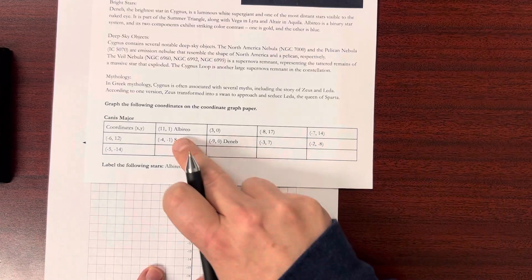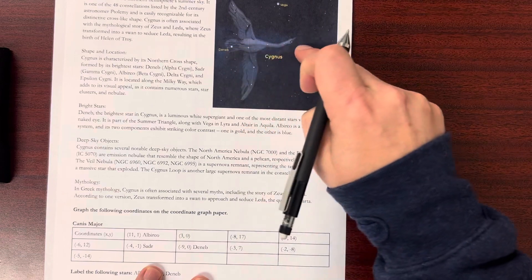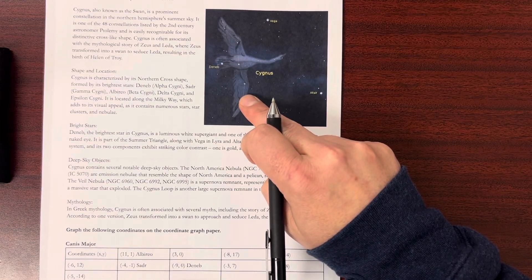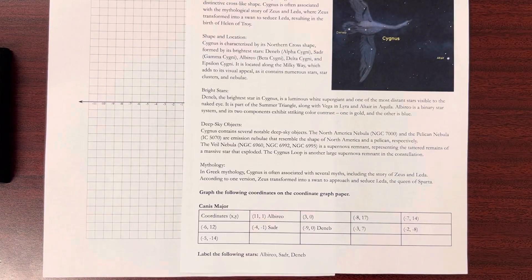You're going to do that for the rest of these. Label a couple of these other stars, and then draw in the connecting lines that show Cygnus the Swan. All right. Let me know if there's any questions. Thank you very much.